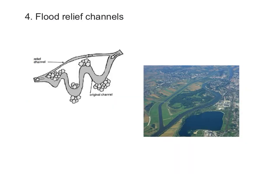The final method is flood relief channels. Imagine you have a naturally flowing meandering river. One option could be to straighten the river channel, but the meandering river might be important for trade, recreational purposes, or ecosystems. What you can do instead is build a new channel — a flood relief channel — which can be used during very high rainfall. There may be a gate called a sluice gate that can be opened during high rainfall periods, allowing water to flow in the relief channel as well as the original channel, thereby reducing the amount of flooding on the flood plain.